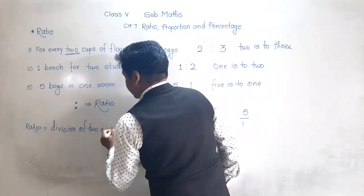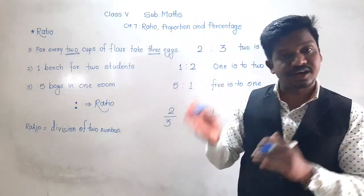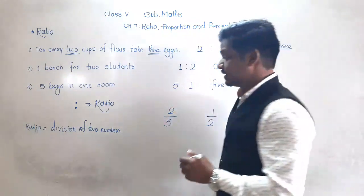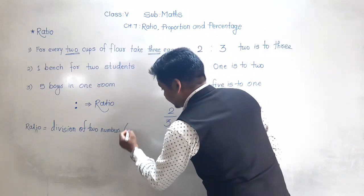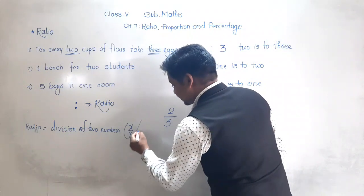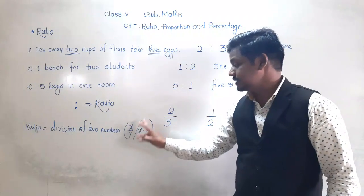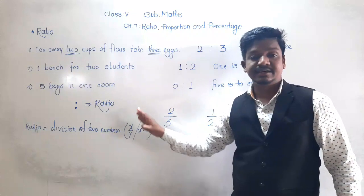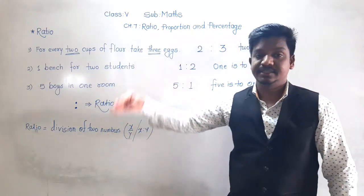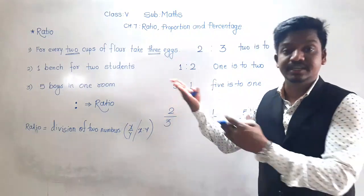If those 2 numbers are x and y, then the ratio of x and y will be x upon y, that is x divided by y, same as x is to y. So x and y are any 2 numbers, and their division means the ratio. This is one of the aspects of ratio.